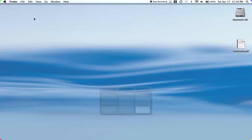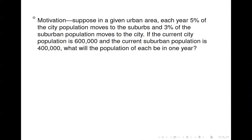Our topic for today is Markov chains. To get us going, we'll look at a small example. Suppose in a given urban area, each year five percent of the population in the city moves to the suburbs, and three percent of the suburban population moves to the city. We're going to assume this is a closed system, so any movement just goes from the city to the suburbs or suburbs to the city.